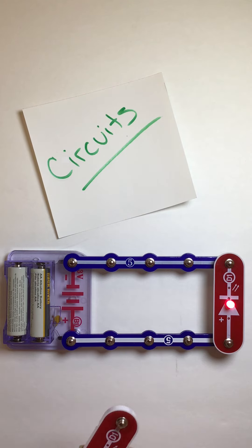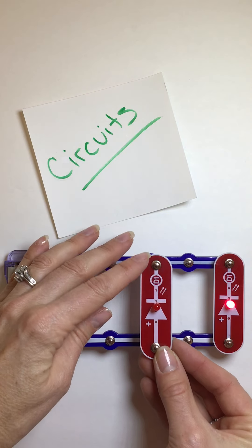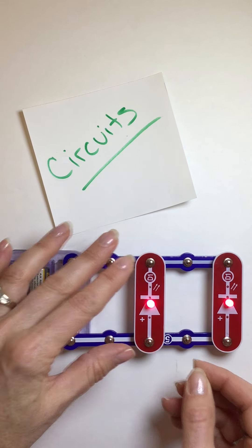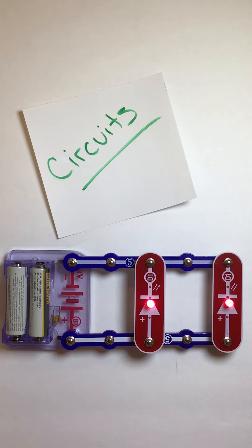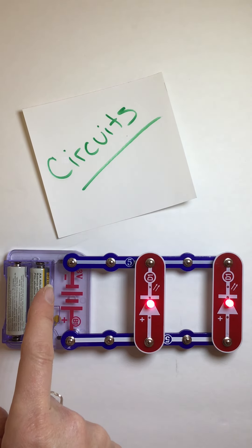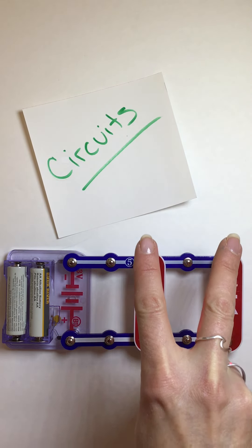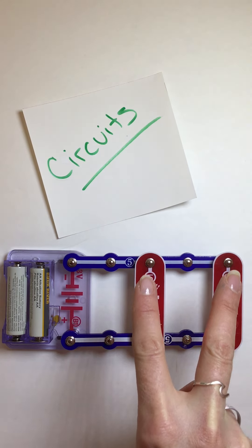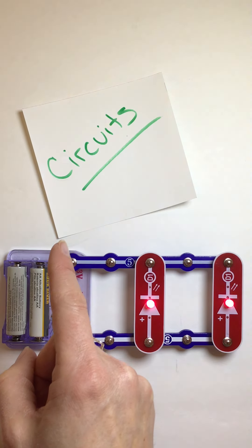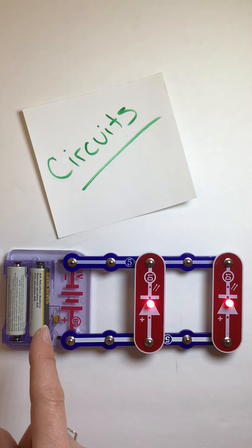But when I put in another load, I now have a parallel circuit. So what's happening is the power is coming from the battery, and it's going down two loads that are parallel to each other before returning through the path to the battery.